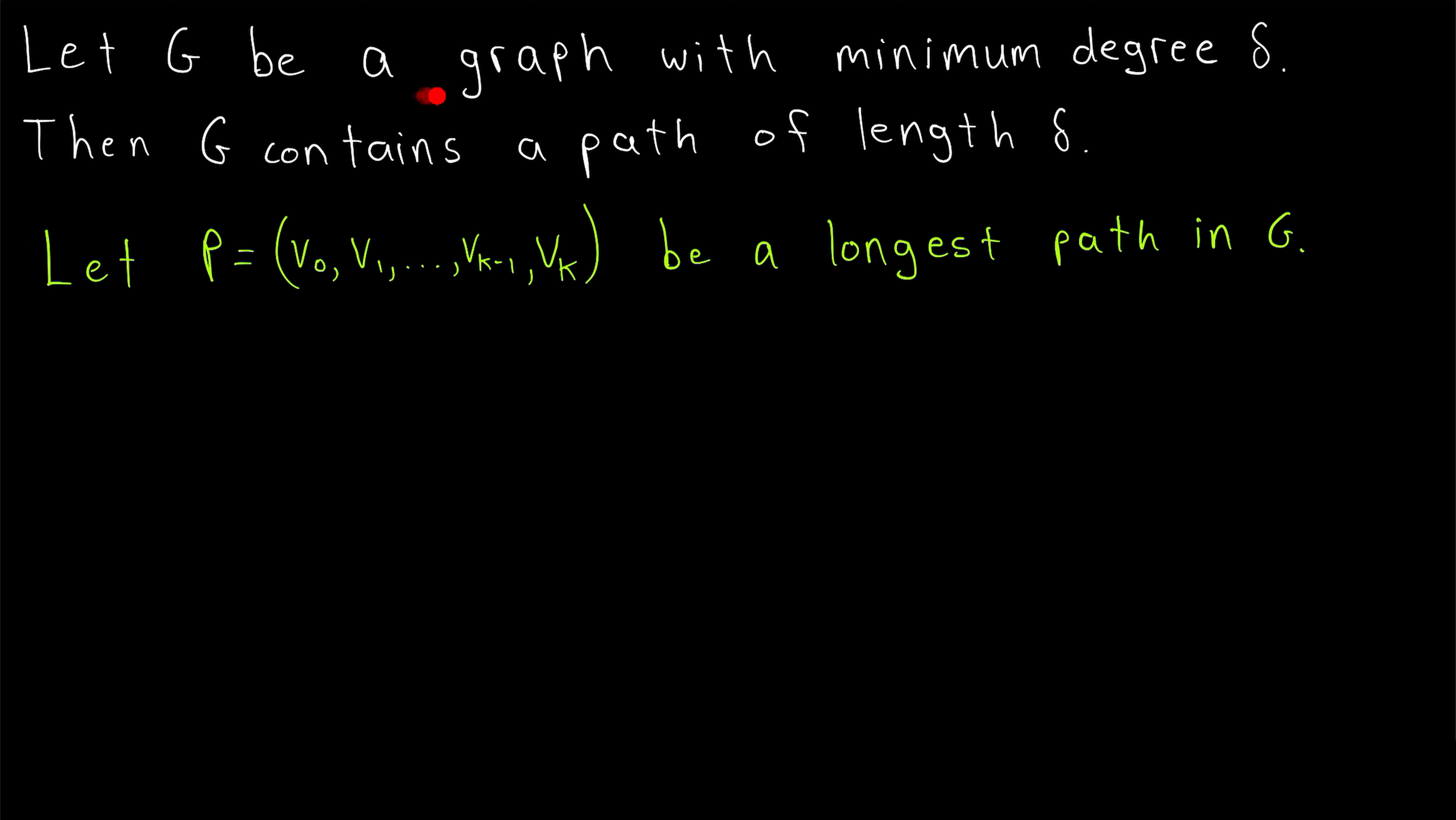So we're going to say let G be a graph with minimum degree delta, and let P be a longest path in G. We'll say that P has vertices v0, v1, all the way up through vk minus one, and then finally some final vertex vk.